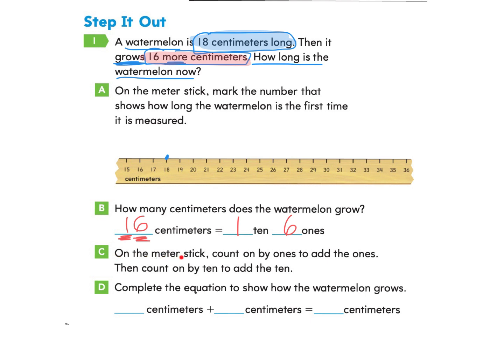Part C says, on the meter stick, count on by ones to add the ones. Then count on by 10 to add the 10. So we're going to start here with the one and we're going to count on six. And when we start at 18 and we count on six, we're going to go to the number 24. That's adding six.